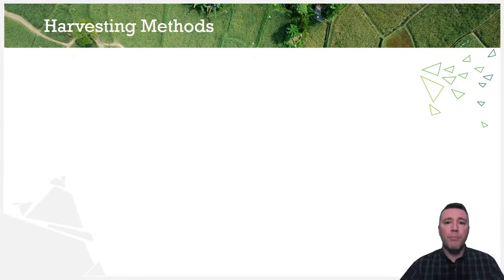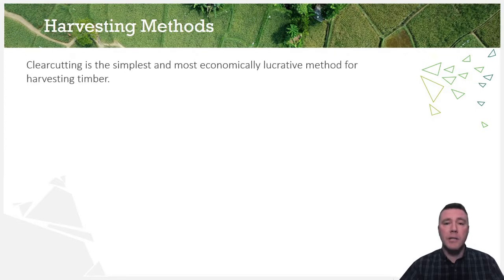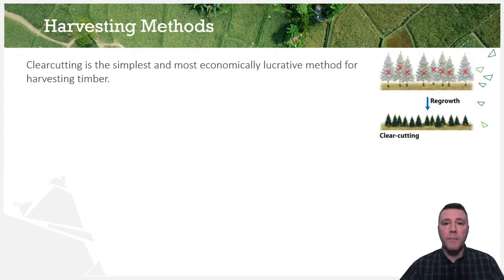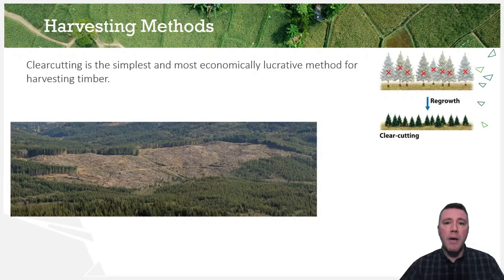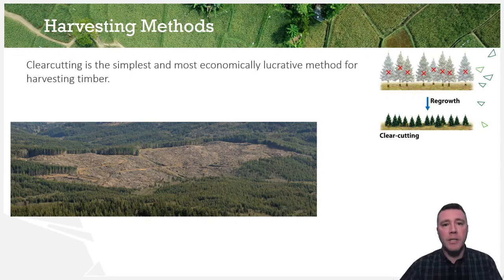Since timber is the primary resource harvested from forests, let's take a look at a few common harvesting methods. The simplest method is self-defining — it's called clear-cutting. Clear-cutting involves the removal of every single tree in a given area. Because this method yields the greatest quantity of material, it is the most economically lucrative for the company engaging in the practice.